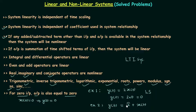Here the constant 2 is present apart from the output and input, so the system is non-linear. Verifying with property 9: let x(t) = 0, then y(t) = 2, which is not equal to zero. Since y(t) ≠ 0 when input is zero, the system is non-linear, because for every linear system when input is zero the output must also be zero.